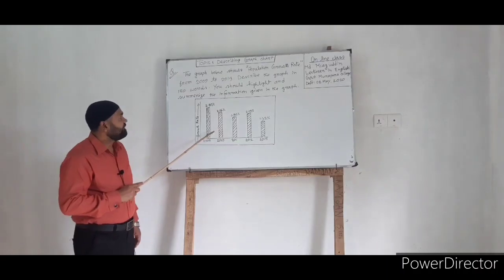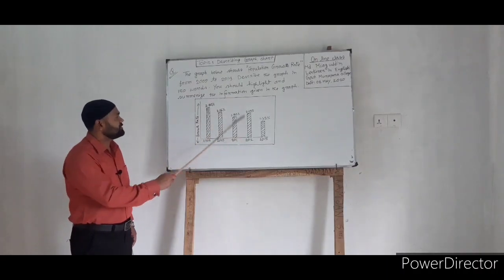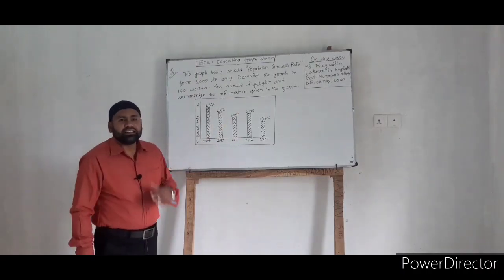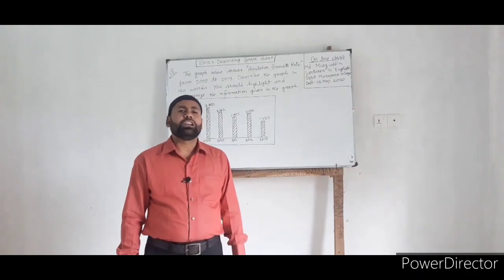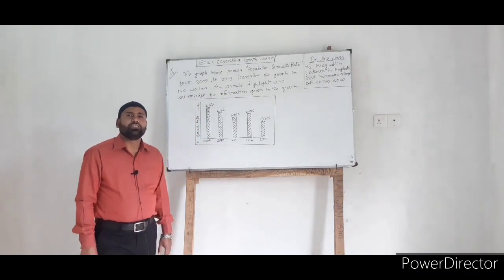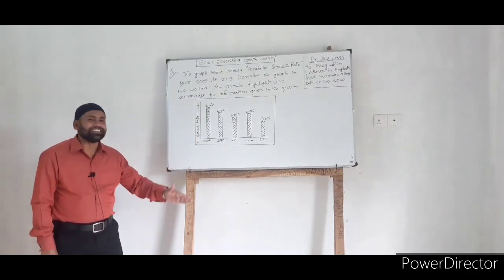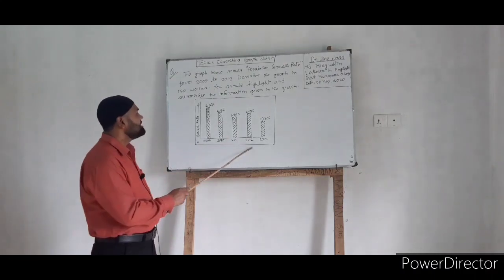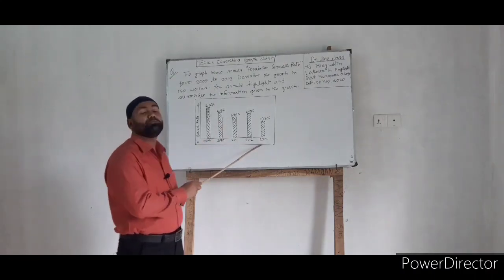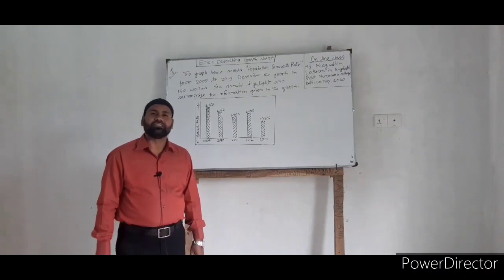It is evident that though there was fluctuation in the chart, the growth rate of population decreased gradually throughout the years. It indicates a positive aspect for the country.